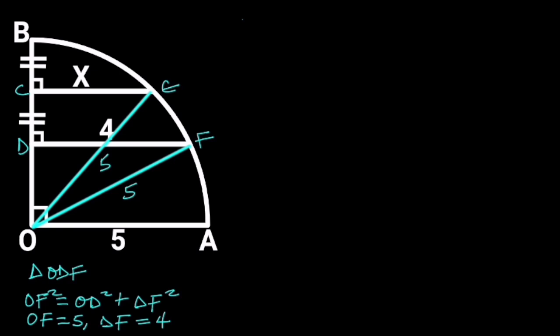Substituting these values in the formula will give us 5 squared is equal to OD squared plus 4 squared. If we make OD squared the subject formula, we will have OD squared is equal to 5 squared minus 4 squared. 5 squared is equal to 25, and 4 squared is equal to 16. 25 minus 16 is equal to 9.